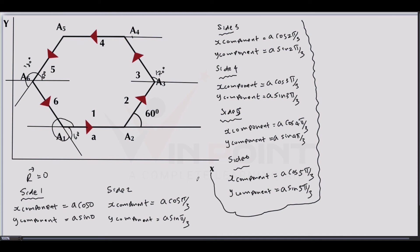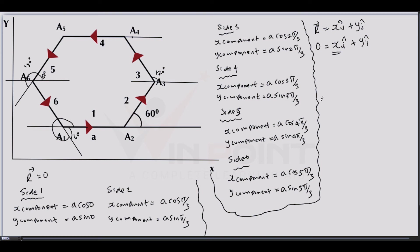Now we have all the x-components and y-components. The resultant vector R equals x·i + y·j. Since the resultant vector is zero, both the x-component and y-component must individually be zero — only then will their sum be zero.